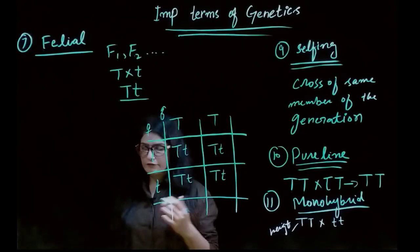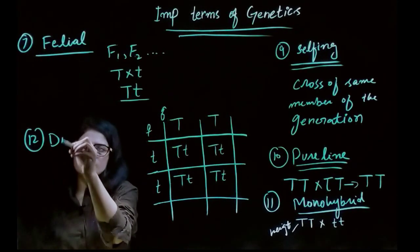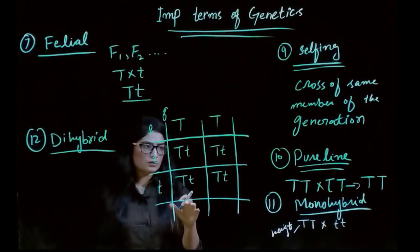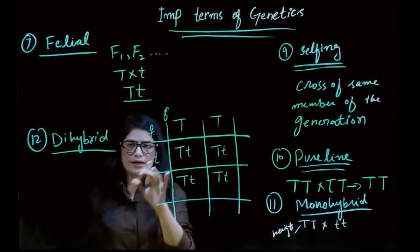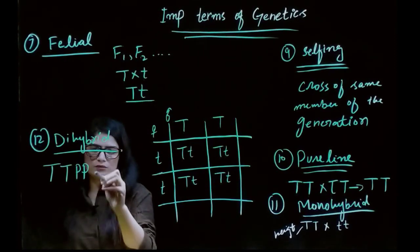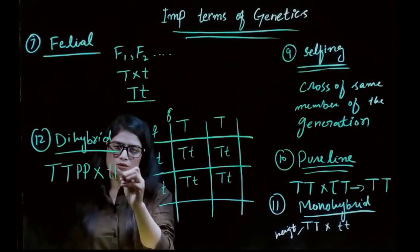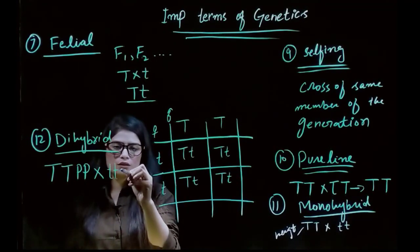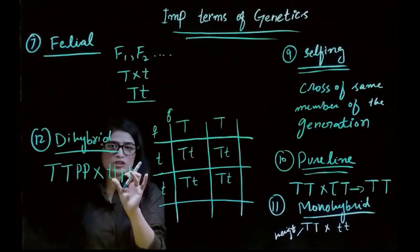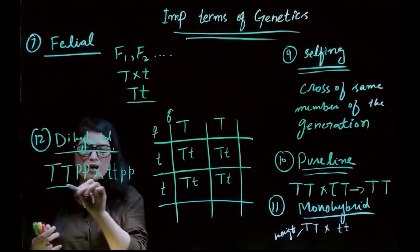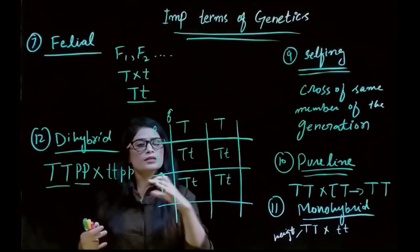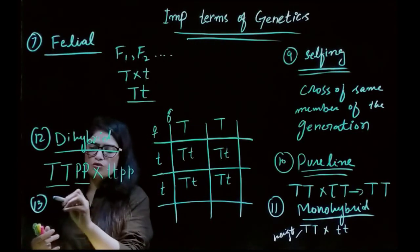The next term is dihybrid cross. A dihybrid cross means we are checking two different characters at the same time. For example, we cross a tall plant with purple color against a dwarf plant with white color. The dominant traits are tall and purple; the recessive traits are dwarf and white. We are checking two characters simultaneously — height and color — so it is called a dihybrid cross.